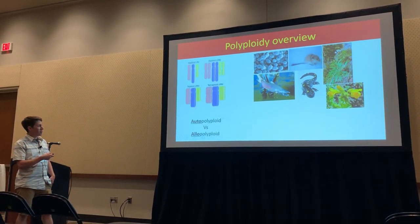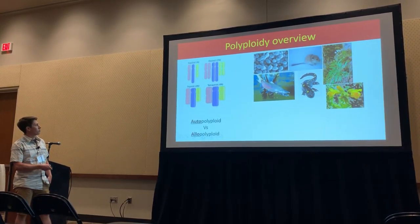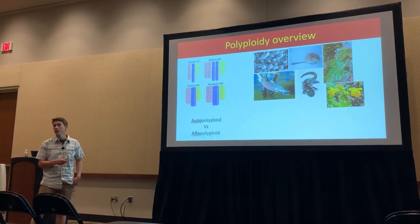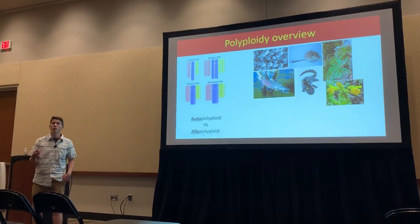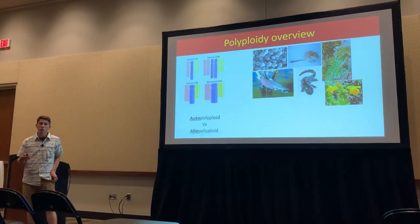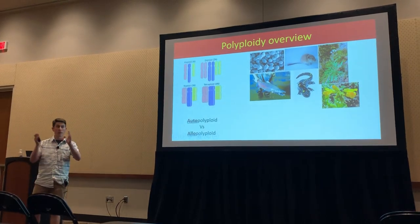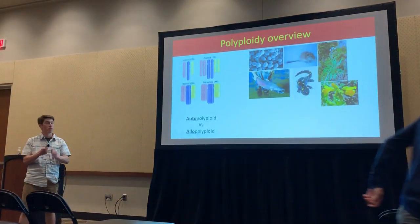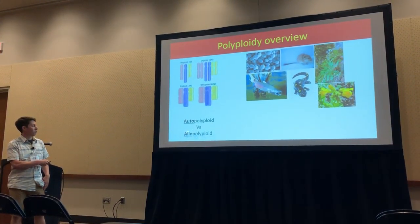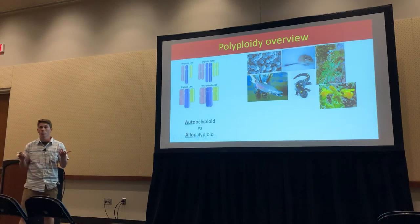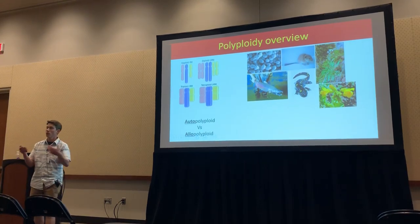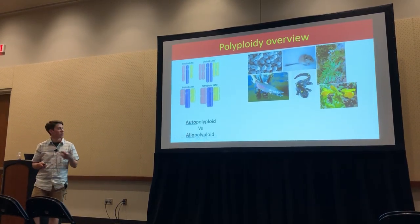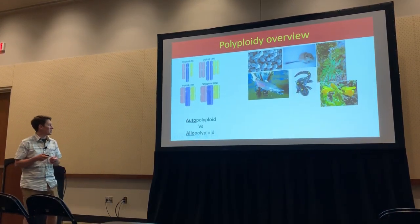We can divide polyploids into roughly two equivalent groups: the auto-polyploids, where all of your homologous chromosomes derive from the same ancestral species, compared to allo-polyploids, where the extra chromosomes result from the hybridization of two distinct species.